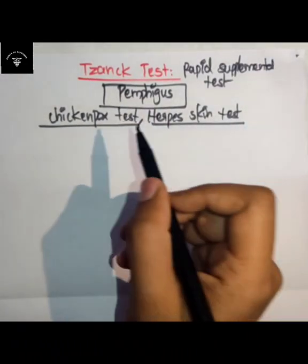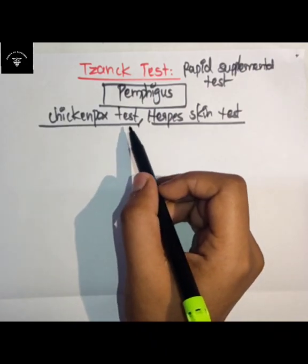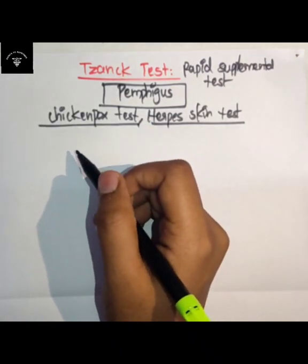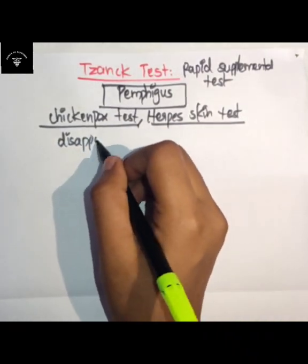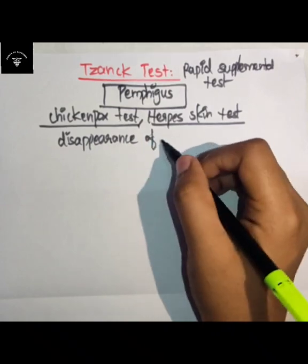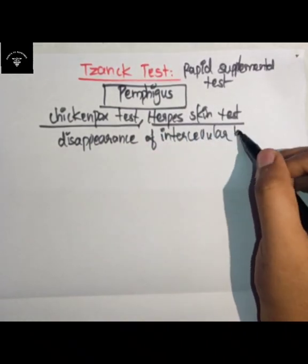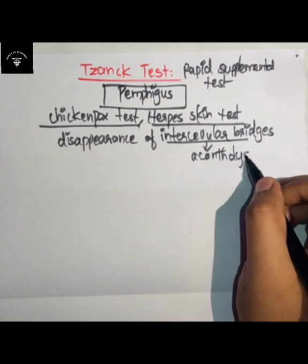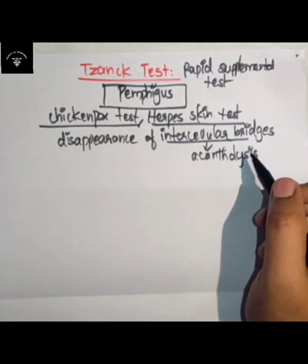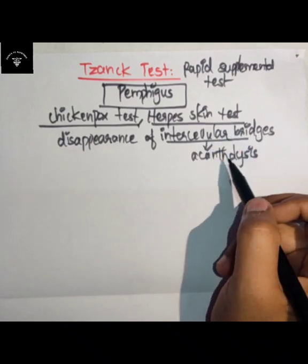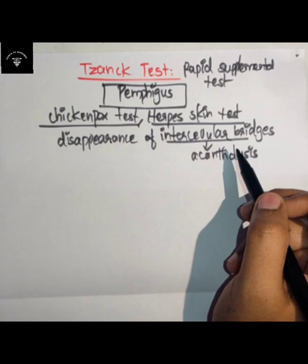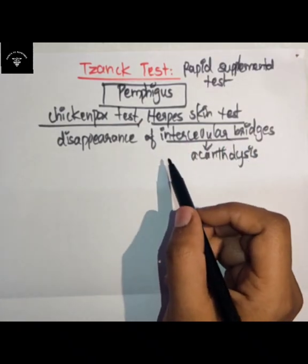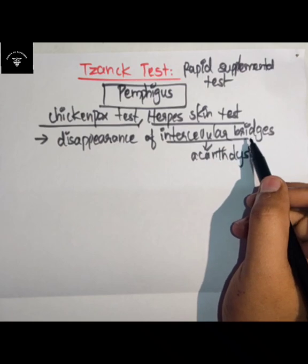On histological examination, there will be a disappearance of intercellular bridges. This disappearance of intercellular bridges is called acantholysis. Acantholysis is the loss of intercellular connections or the intercellular bridges between cells.